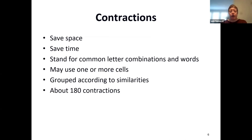Contractions, as I said, are not English grammar contractions, but in braille they stand for common letter combinations and words. Contractions might use one or more cells — they might use two cells or even three cells sometimes. The contractions are grouped according to similarities. There are about 180 contractions, so just focus on the ones that are showing up in your everyday life now. You can always learn more later.